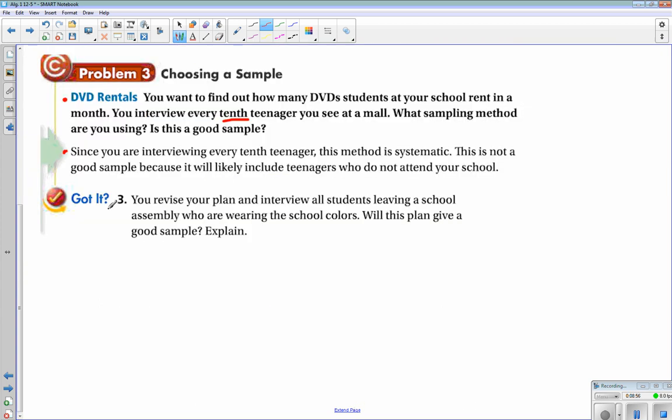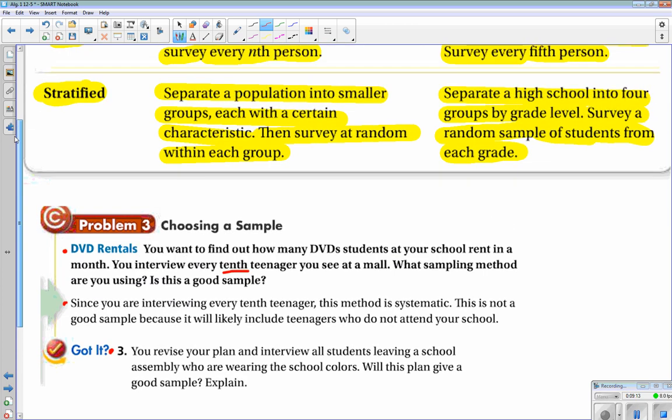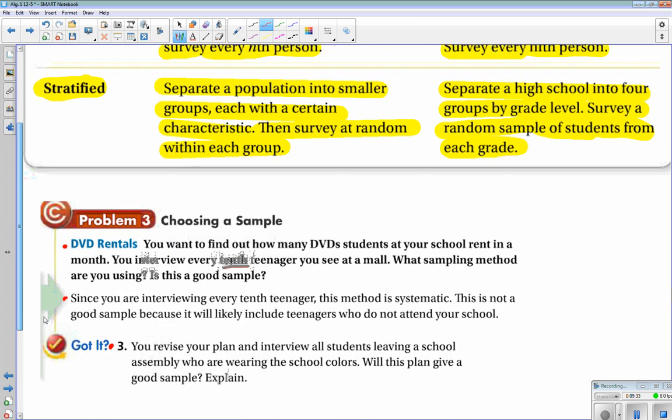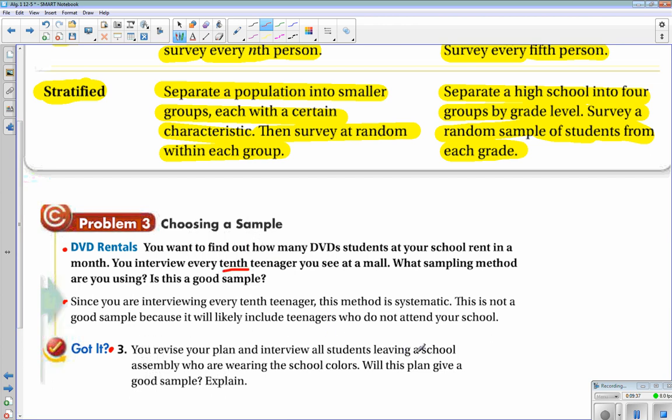So, let's look at our problem here. You revise your plan and interview all students leaving a school assembly who are wearing the school colors. Will this plan give you a good sample and explain? So, let's see. We have to look at which one does this most closely represent, and I think it's probably closer to stratified if we look. Because we are getting students leaving an assembly, but we are grouping them off into students wearing school colors.